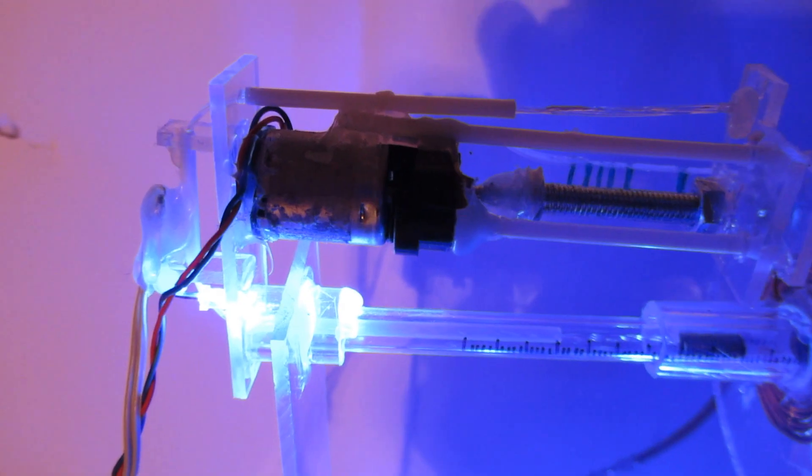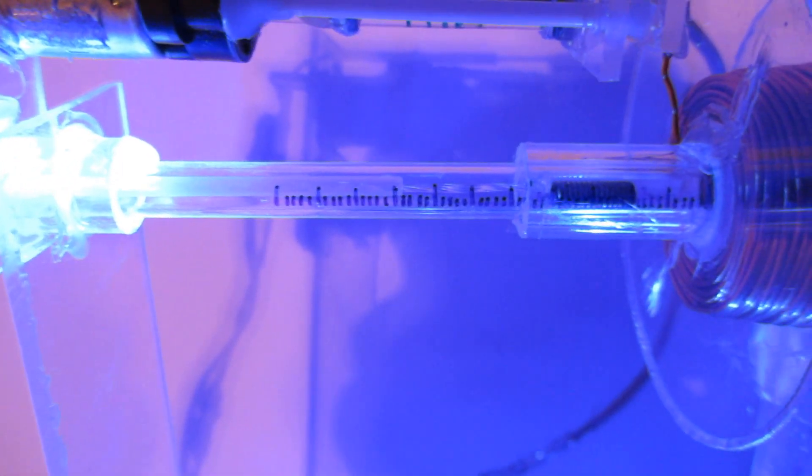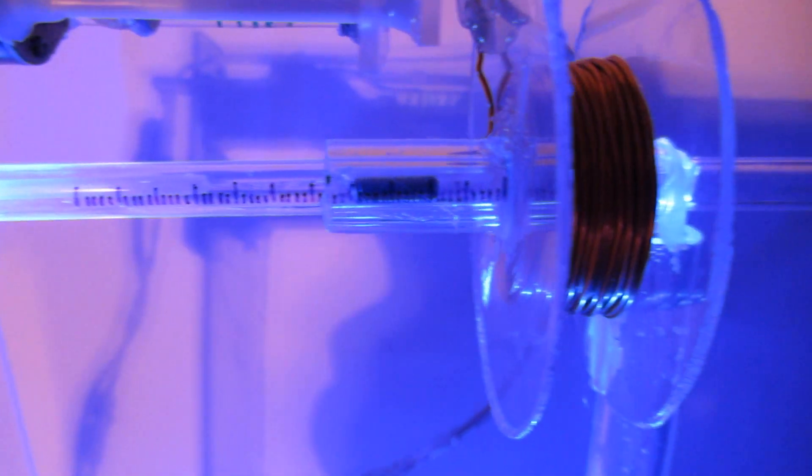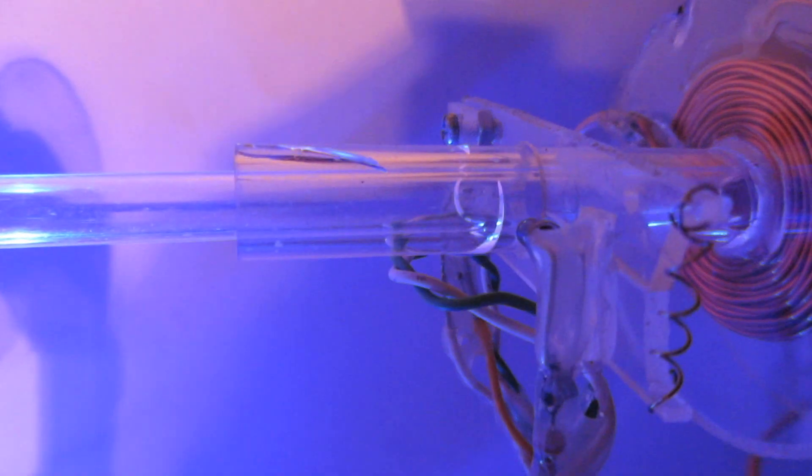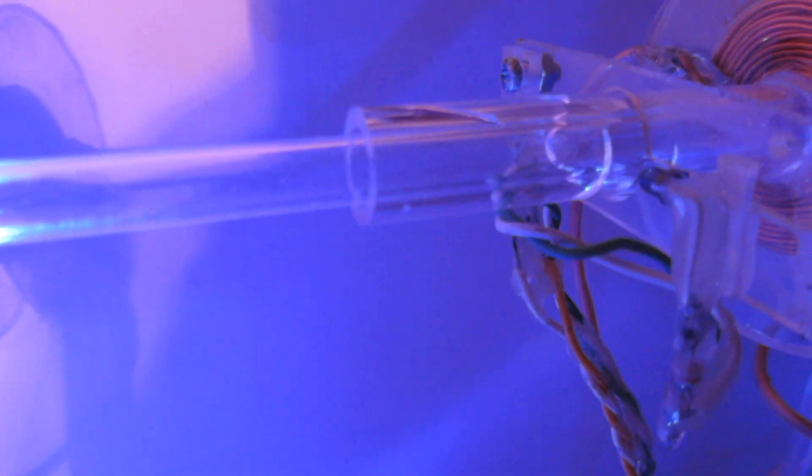With the help of this linear actuator we will position the projectile very precise in front of the first stage here. It will travel up to here. This is the light barrier from the second stage which will activate this coil. It will travel further through these two laser barriers which will help us read the velocity.